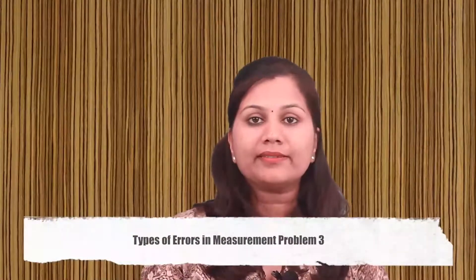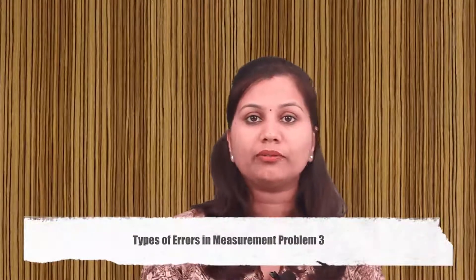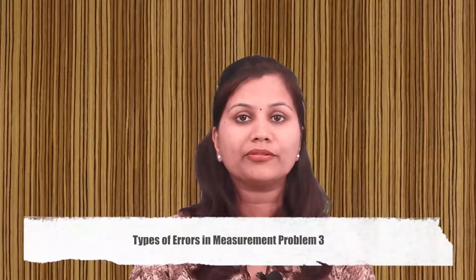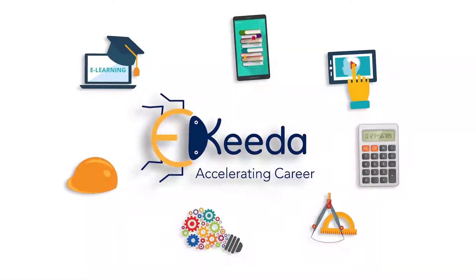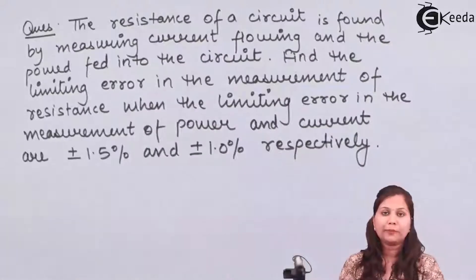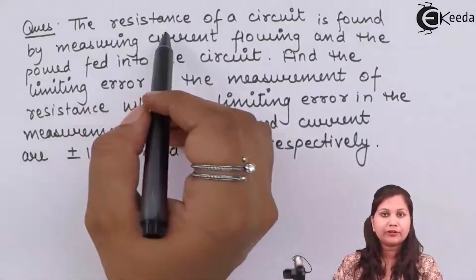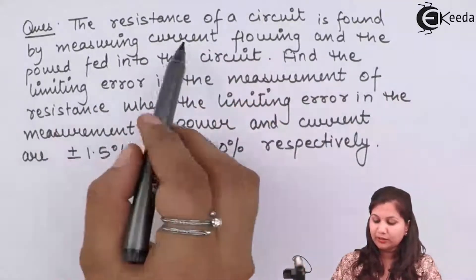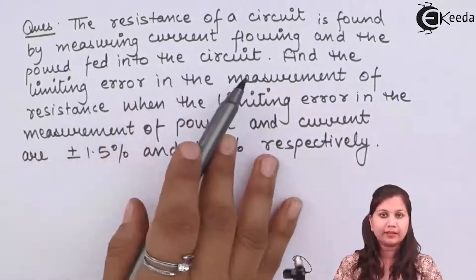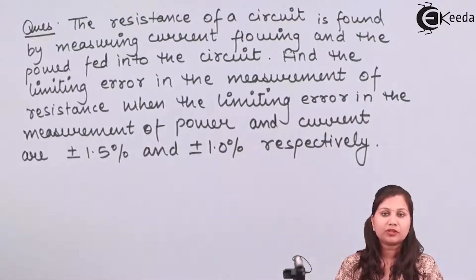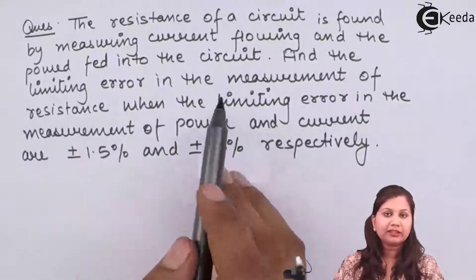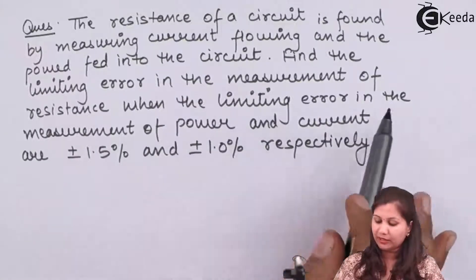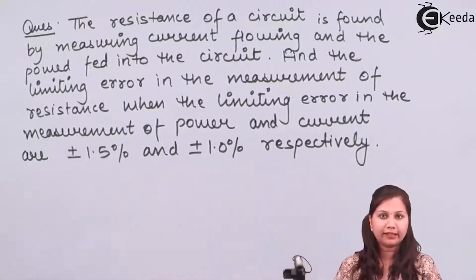Hello friends. In this video we are going to solve a problem based on the measurement of errors. We are measuring the resistance of a circuit by measuring the current flowing and the power fed into the circuit. So resistance is measured by measuring the power and the current. We have to find out the limiting error in the measurement of resistance when the limiting error in the measurement of power and current is given to us.